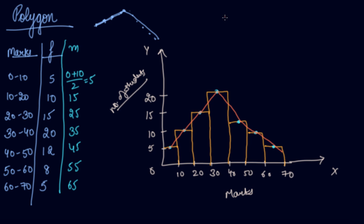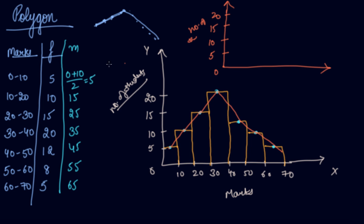You can also draw the polygon without the histograms. In that case, draw a graph where the y-axis shows the number of students (frequency) with values 5, 10, 15, 20, and on the x-axis take the midpoints: 5, 15, 25, 35, 45, 55, and 65.